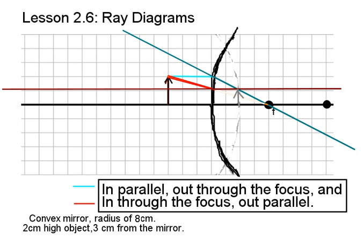So what kind of image did we get here? It's smaller than the original object. It's roughly one unit high instead of two units high, so we can say that this image is reduced. It's right side up. It's pointing the same direction as the original, so we can say that the image is upright, and it's behind the surface of the mirror. You don't need a screen to see it. The light appears to be coming from inside the mirror, so the image we get is virtual.